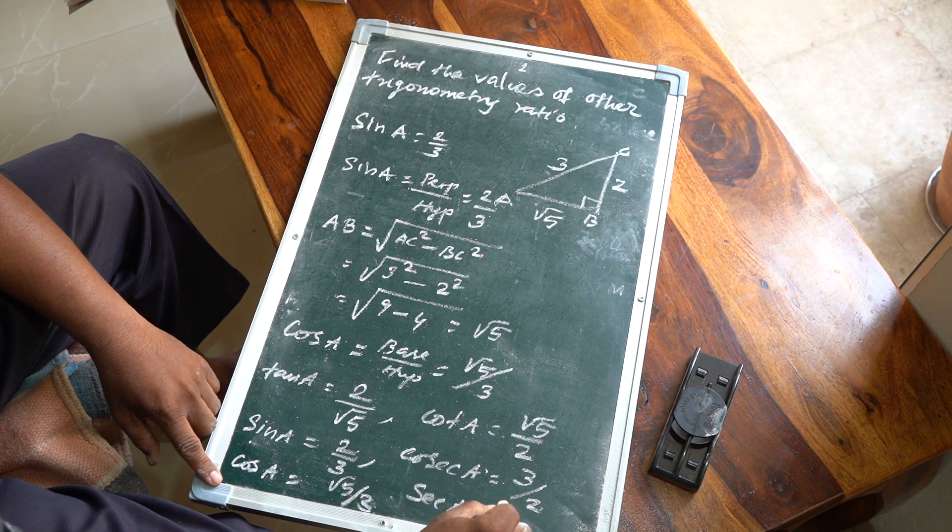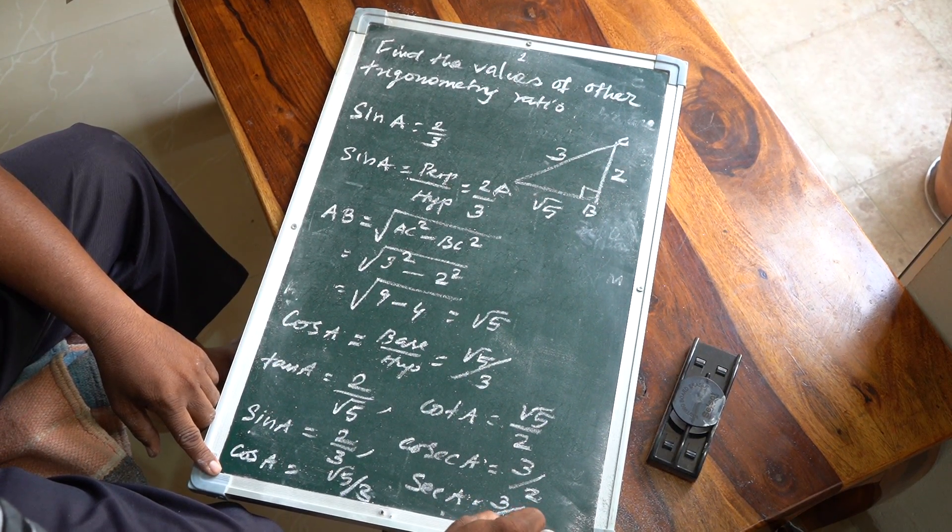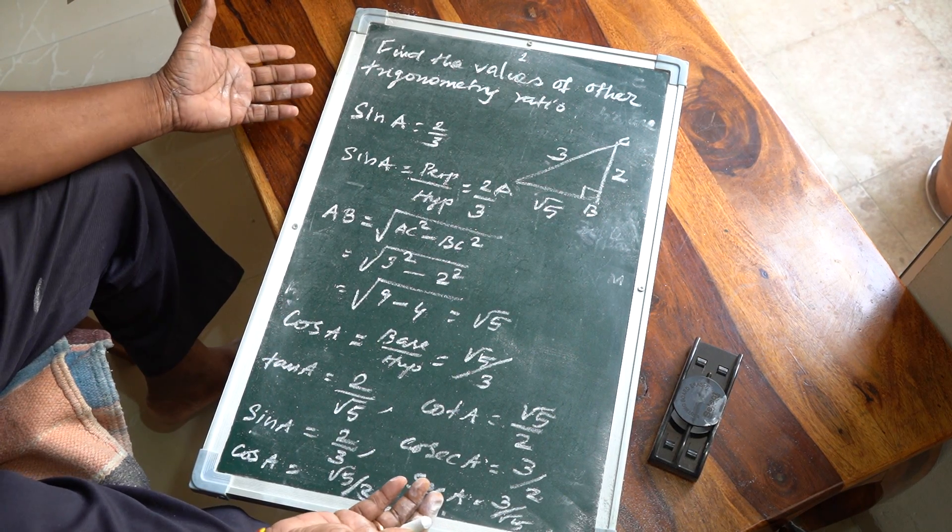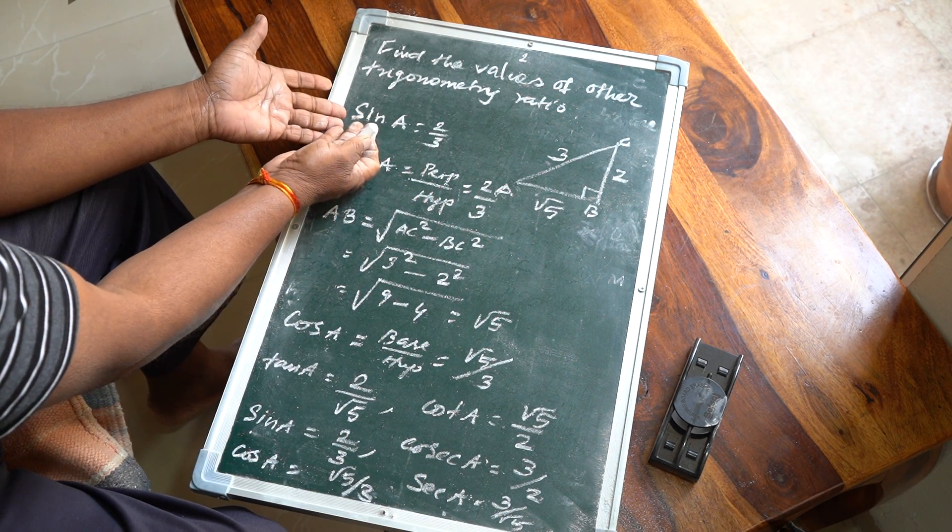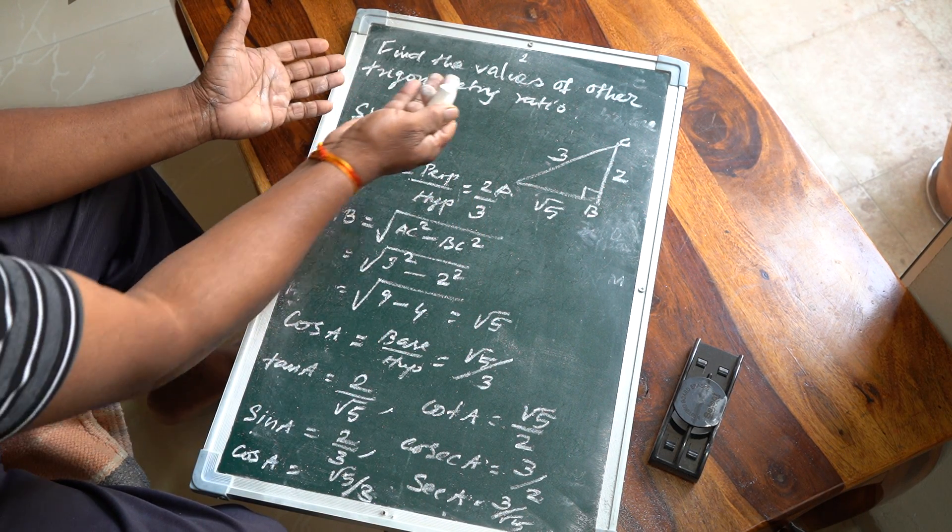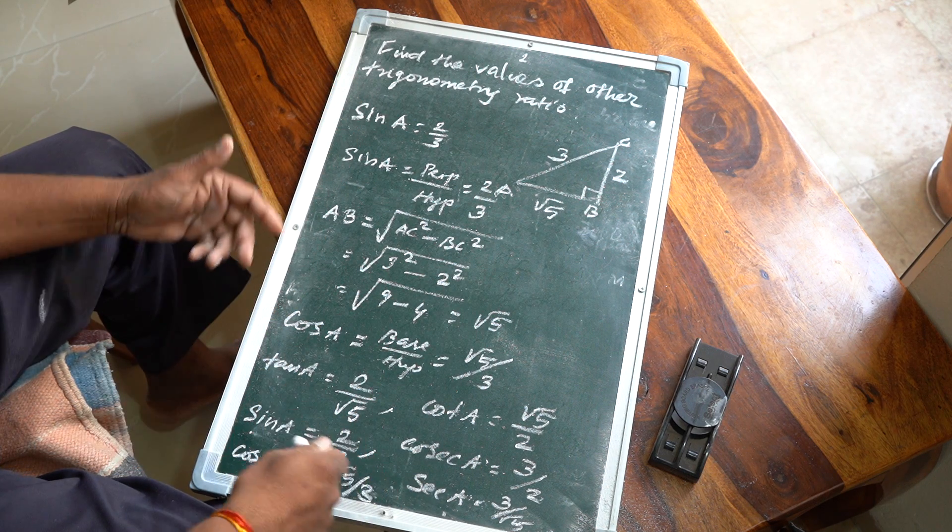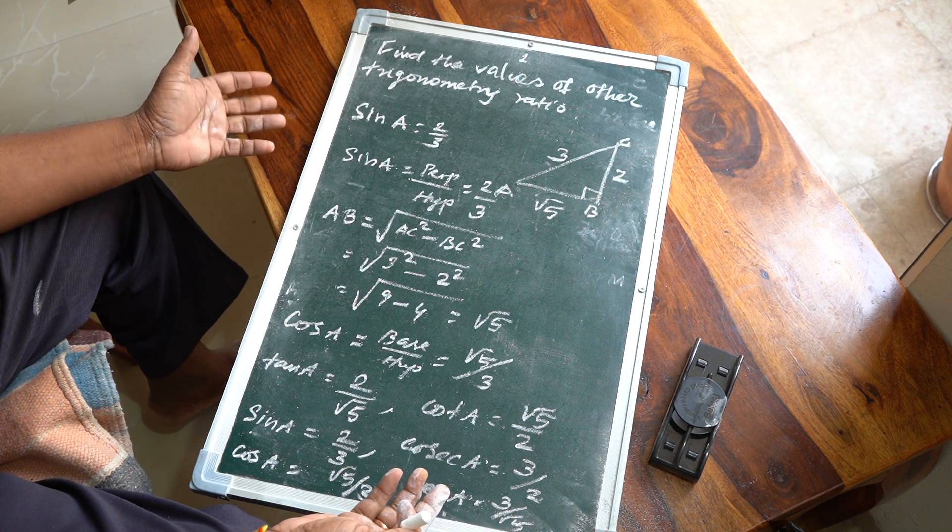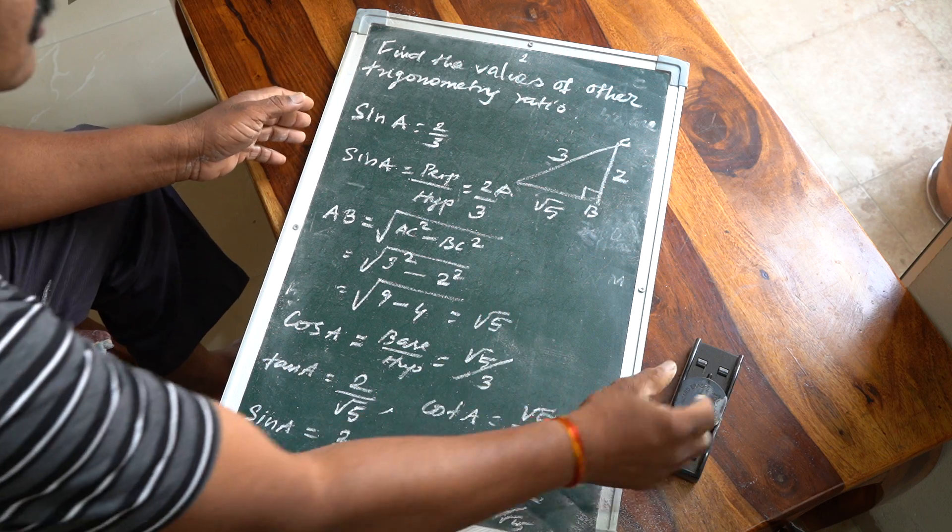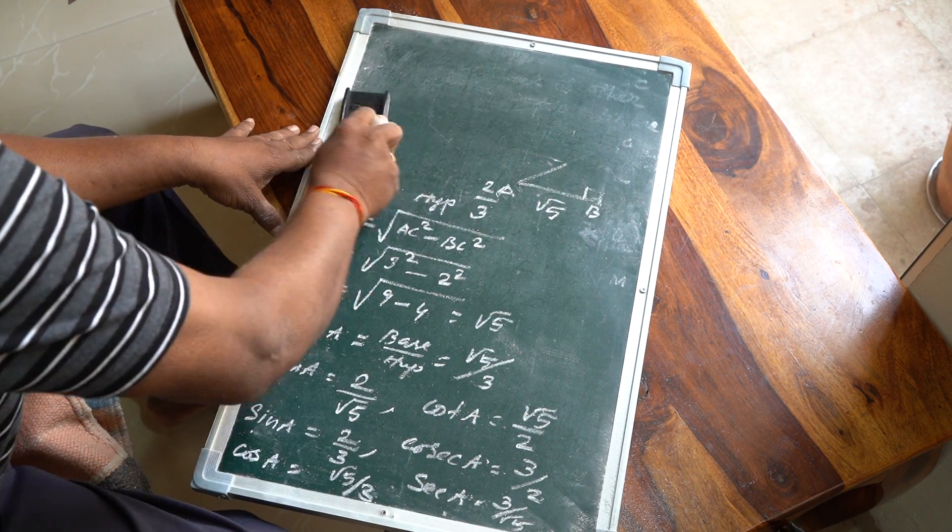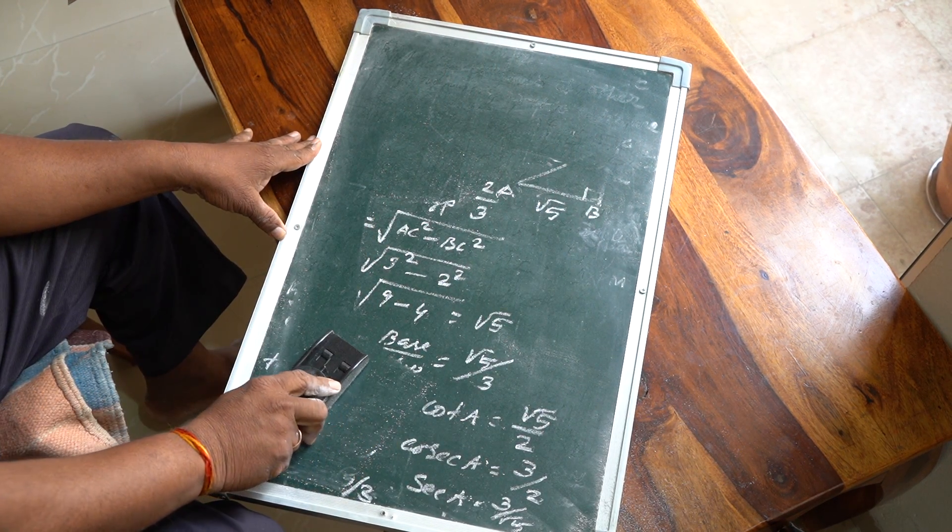Yes, with sine A = 2/3 given, all other trigonometry ratios can be found. Okay, we go to the next sum.